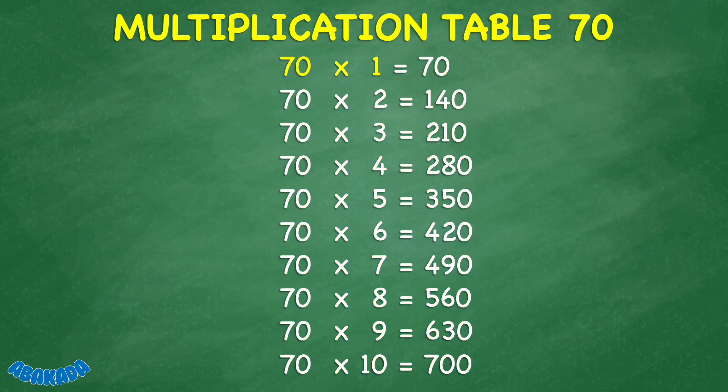70 times 1 equals 70. 70 times 2 equals 140. 70 times 3 equals 210. 70 times 4 equals 280. 70 times 5 equals 350.